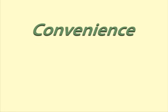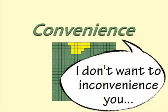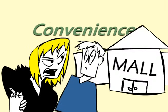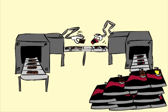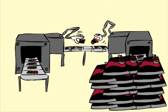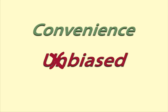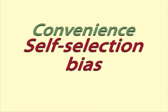Convenient sampling is just that — convenient. You ask people nearby or people who walk past at a shopping mall, or you take the next 20 objects off the production line. You do what is easy or convenient. Convenient samples are often biased in some way, but for a quick and cheap poll it may not really matter. Convenient samples can also have self-selection bias when people choose to participate because they have an interest in the issue in question.